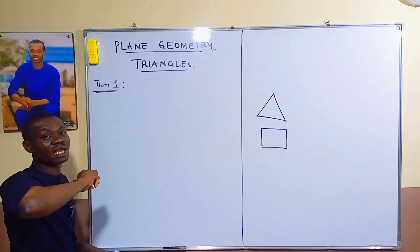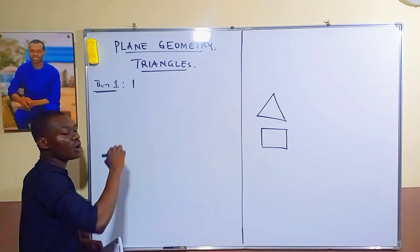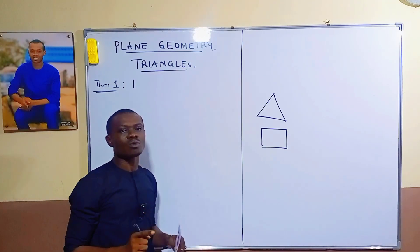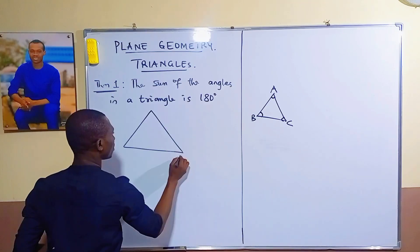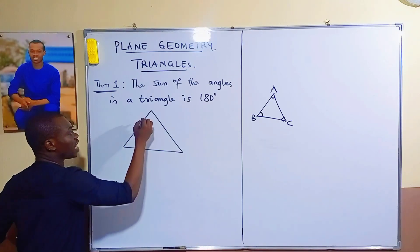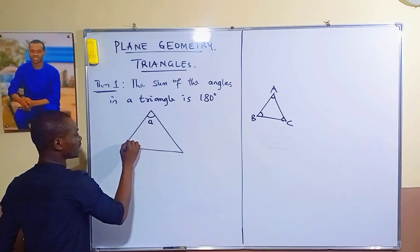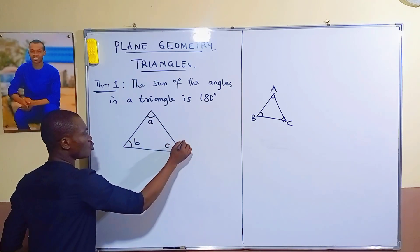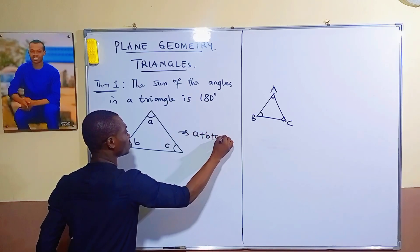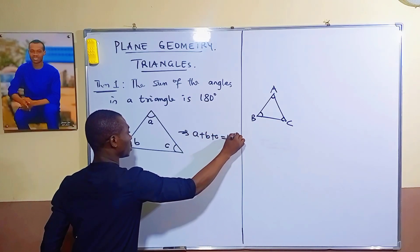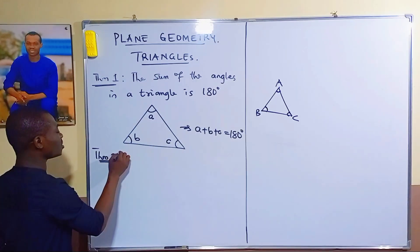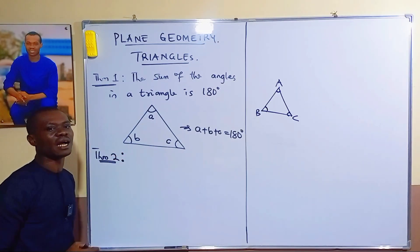Theorem one states that the sum of angles in a triangle is equal to 180 degrees. So if you have a triangle with angles A, B, and C, the sum of those three angles equals 180 degrees.